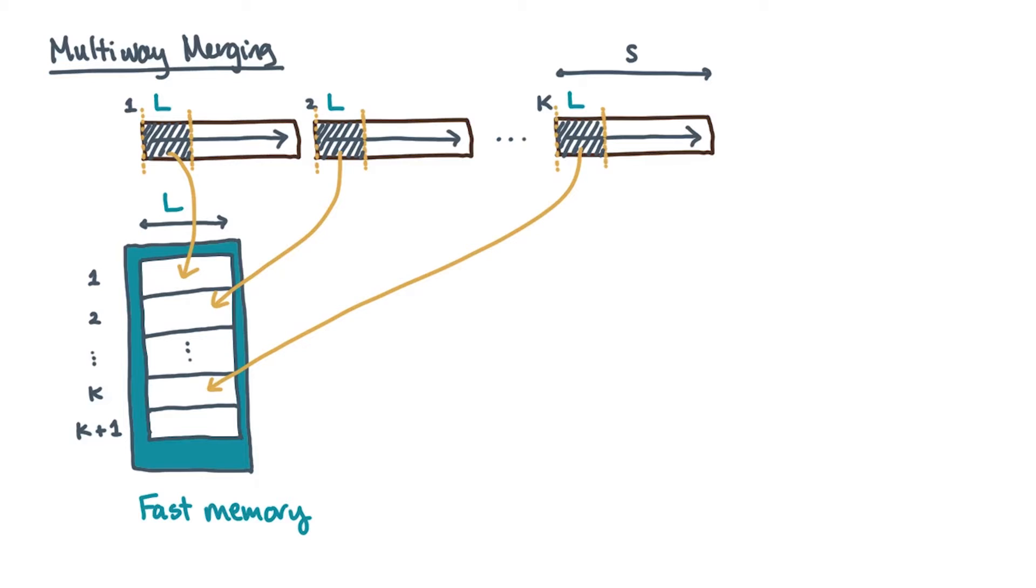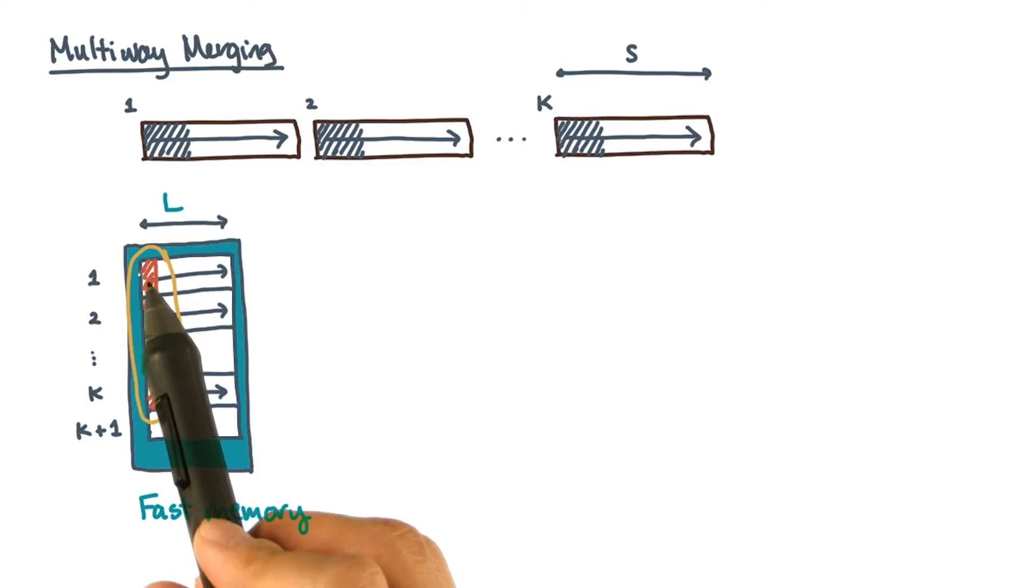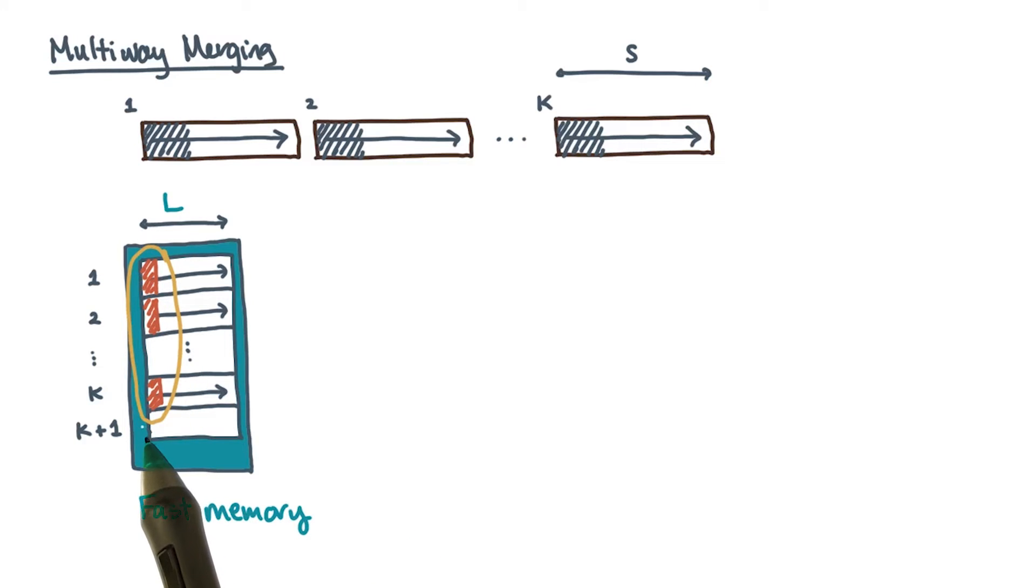Initially, you would fill the inputs with blocks of the input runs. Now, at each step of the local merge, you need to know which of the K input blocks has the next smallest item. Let's say that these shaded items are the next ones to consider from each of the K input blocks. Of these, you need to somehow find the smallest. Let's say that's this item. We'll come back to precisely how to find it in just a moment.